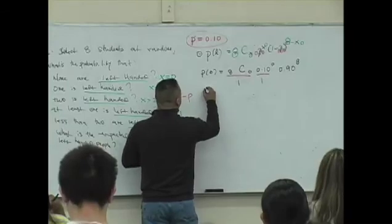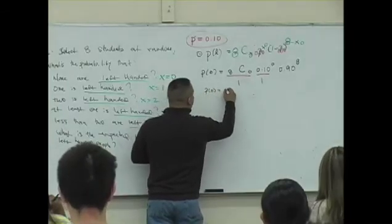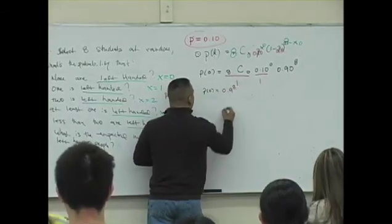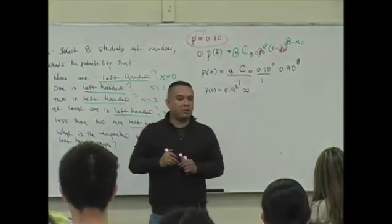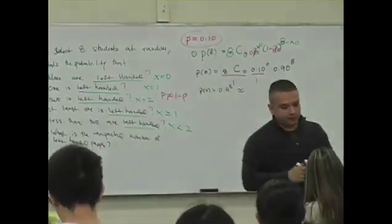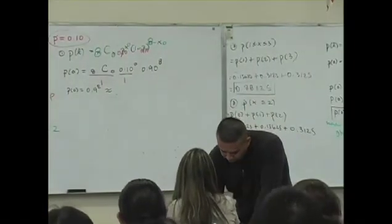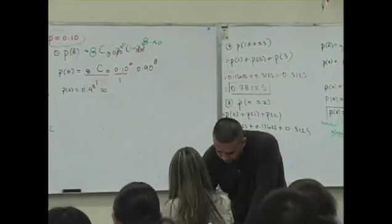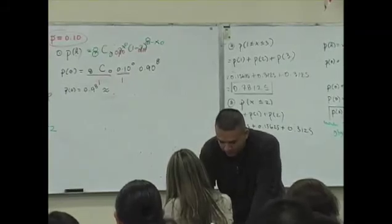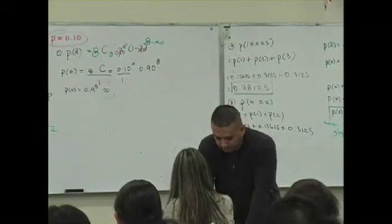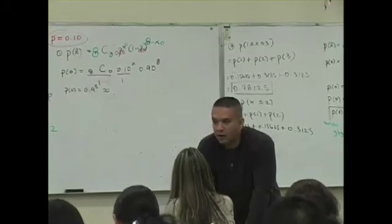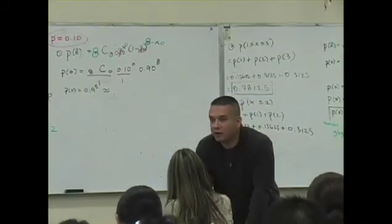So here we go. p of zero now is going to be what? p of zero is 0.9 to the eighth power. What does your calculator say there? What is that approximately? 0.9 to the eighth power. What is it? Let's round this to the nearest thousands. And you're right. It's 0.430.